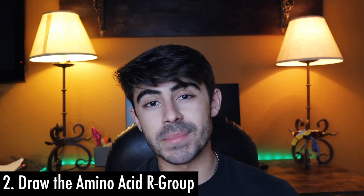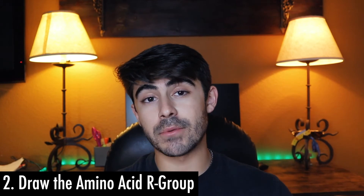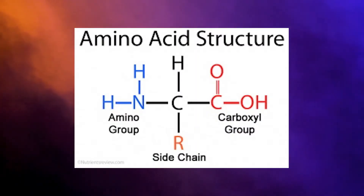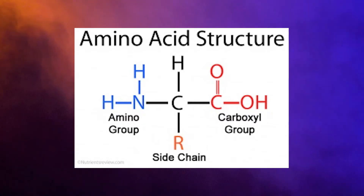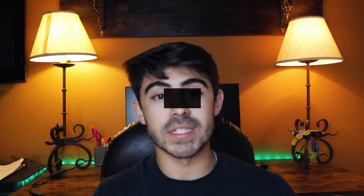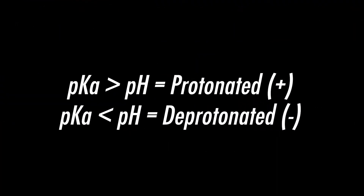Number two is draw the amino acid R groups. To save some time, I would only draw the R group of the amino acid, since all amino acids follow a similar base structure — the alpha carbon connected to hydrogen, an amine group, and a carboxylic acid group. This could be protonated or deprotonated based on pH and pKa. If the pKa is higher than the pH, it's protonated; if the pKa is lower than the pH, it's deprotonated. If you can confidently draw the R group, you're guaranteed to recognize it on an exam.